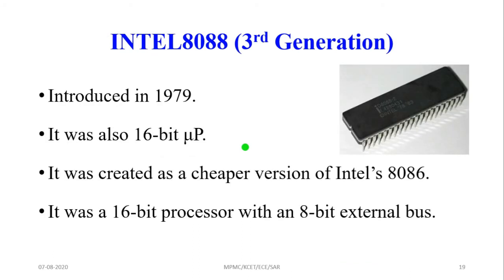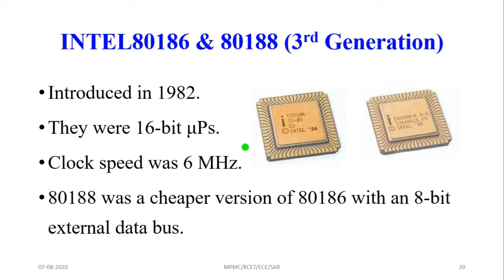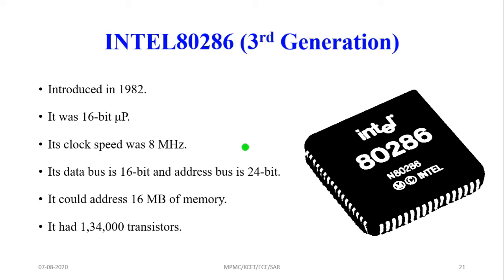The Intel 8088 is a third generation microprocessor, a cheaper version of the 8086, introduced in 1979. The Intel 80186 and 80188 are also third generation, introduced in 1982 as 16-bit microprocessors with a clock speed of 6 MHz. The Intel 80286 is also third generation, introduced in 1982, with a 16-bit data bus, 24-bit address bus, accessing up to 16 MB of memory, and containing 134,000 transistors in a single chip.